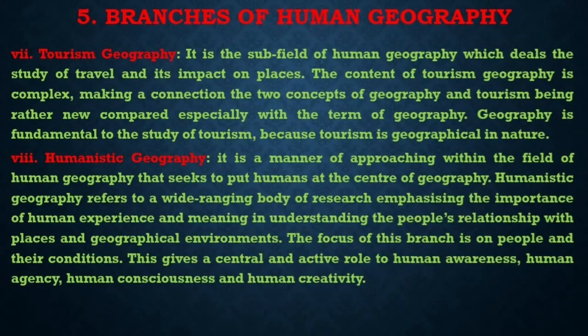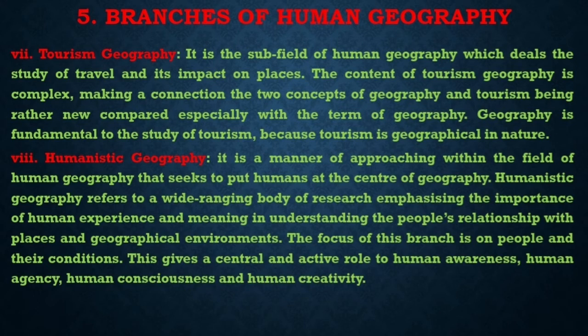The eighth sub-branch is humanistic geography. It is a manner of approaching within the field of human geography that seeks to put humans at the center of geography. Humanistic geography refers to a wide-ranging body of research focusing on the importance of human experiences and meaning in understanding people's relationship with places and geographical environments. The focus of this branch is on people and their conditions, giving a central active role to human awareness, human agency, human consciousness, and human creativity.